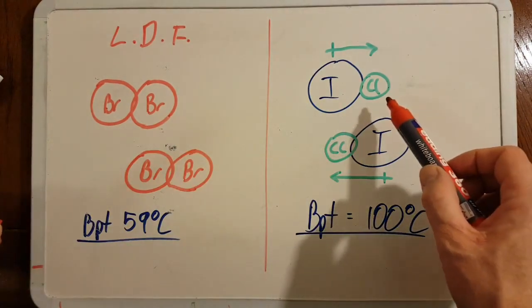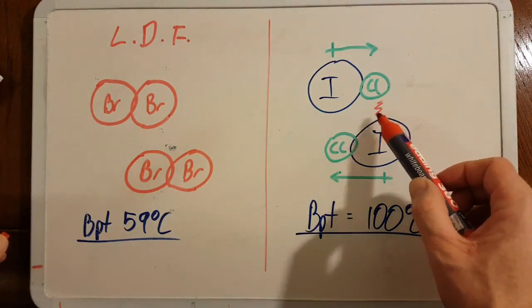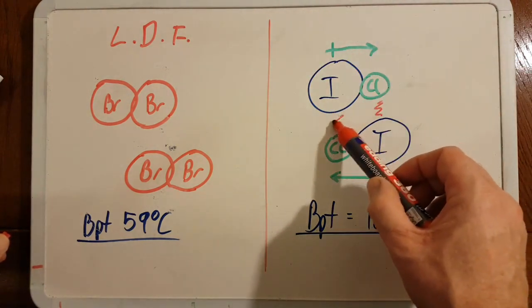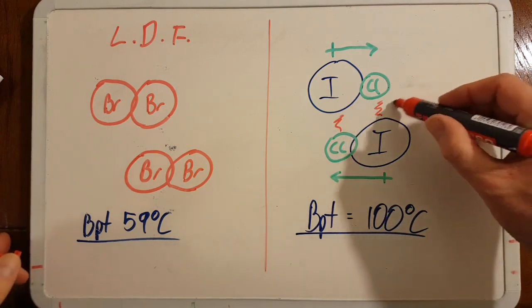But over here the dipole is permanent, so there's going to be an attraction between this negative and this positive, and this positive and this negative. This is the so-called dipole-dipole attraction.